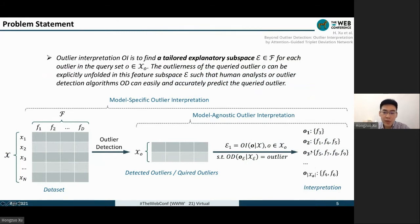Interpretation is to find a tailored explanatory subspace for each outlier. For example, the interpretation of outlier O2 is f1, f4, f5. If the query outliers are detected by a specific algorithm, we call this model-specific outlier interpretation. If we have a list of query outliers, we call this model-agnostic outlier interpretation.